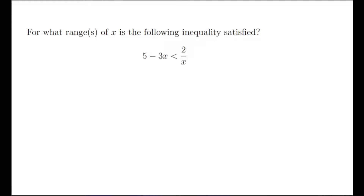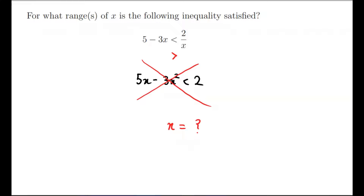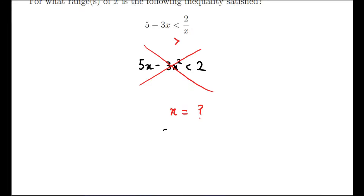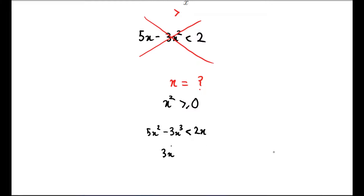Moving on to our third question: for what ranges of x is the following inequality satisfied? On the face of it this looks very simple — multiply by x and get 5x − 3x² > 2. However, this is a very common error. When you multiply an inequality by a negative number the sign must flip, but when we multiply by x we don't know if x is positive or negative. So instead we multiply by x², because x² is always non-negative, giving us 5x² − 3x³ > 2x, which rearranges to 3x³ − 5x² + 2x < 0... wait, larger than 0.